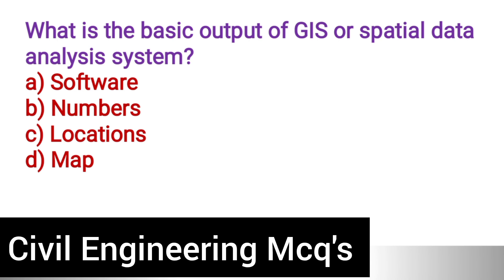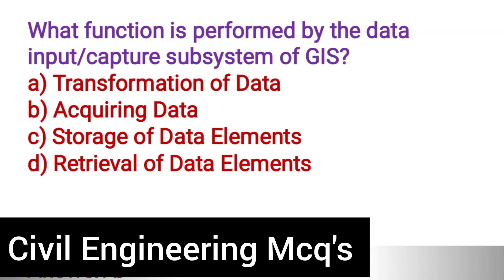Next question: What is the basic output of GIS or a spatial data analysis system? Option A: Software. Option B: Numbers. Option C: Locations. Option D: Map. The correct answer is option D, map. Next question: What function is performed by the data input/capture subsystem of GIS? Option A: Transformation of data. Option B: Acquiring data. Option C: Storage of data elements. Option D: Retrieval of data elements. The correct answer is option B, acquiring data.